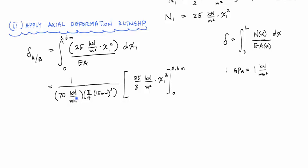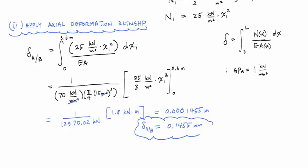Now if I go ahead and integrate this, this is going to be evaluated from 0 to 0.6 meters. One thing you'll want to notice is that the millimeters squared cancels out with millimeters squared from the area, and the bottom number will be left in kilonewtons. When I work this integral out, I get my deformation would be 0.0001455 meters, which in millimeters is equal to 0.1455 millimeters.